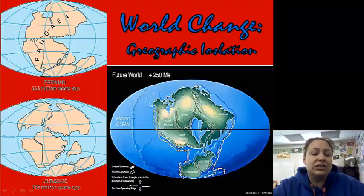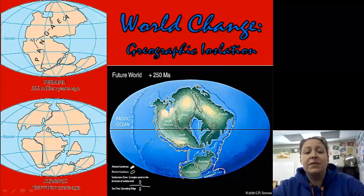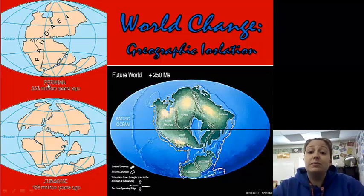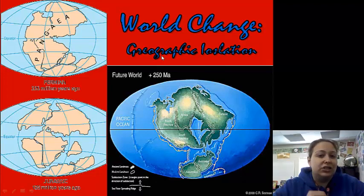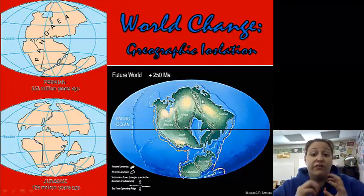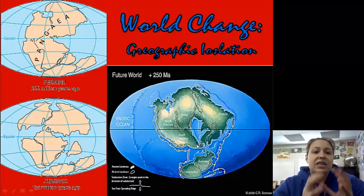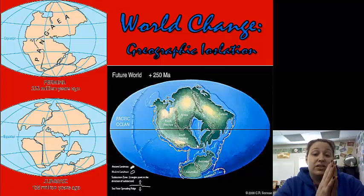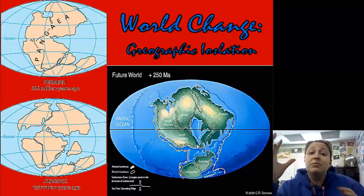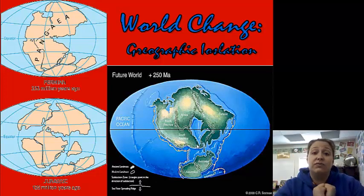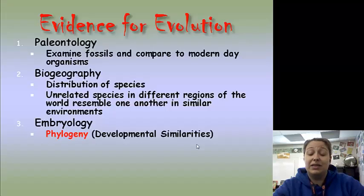The world has changed — we used to be all one big continent, known as Pangea. Then, as our tectonic plates divided, it took the continents with them and separated them. This caused geographic isolation — talking about geography, where you're found on the planet. This split up organisms that used to live together and put them in separate and different portions of the world, even in different climates.